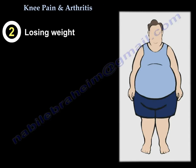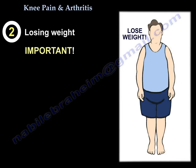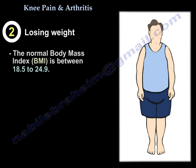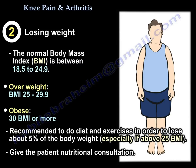The second core issue is losing weight. The normal BMI is between 18.5 to 24.9. Overweight is between 25 to 29.9. Obese is a BMI of 30 or more. It is recommended to do diet and exercise and lose about 5% of body weight, especially if you are above a BMI of 25. The patient will be given a nutritional consult.